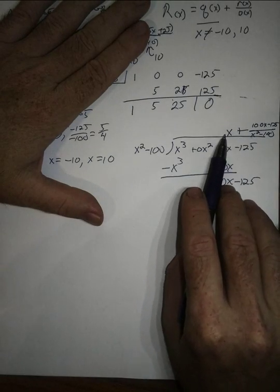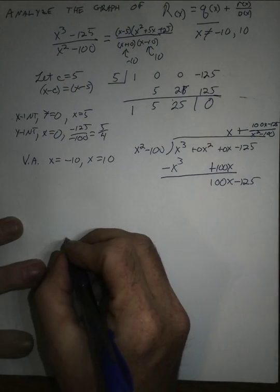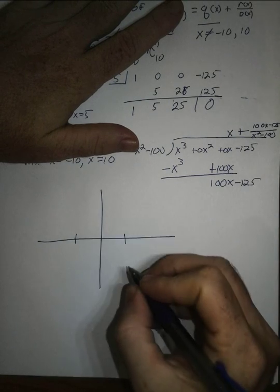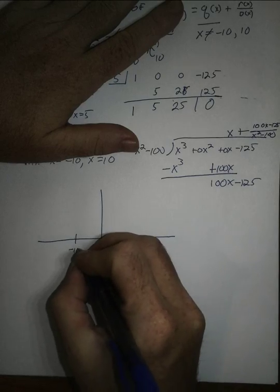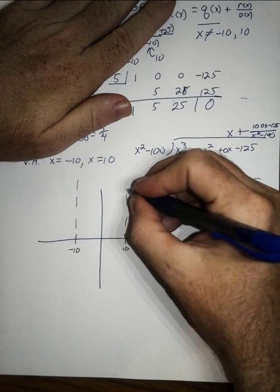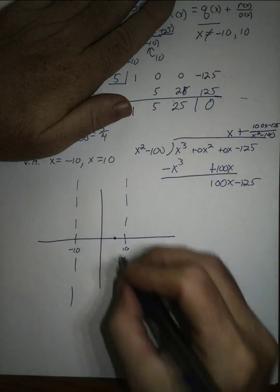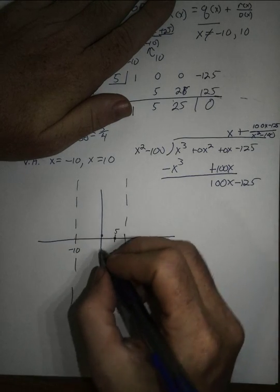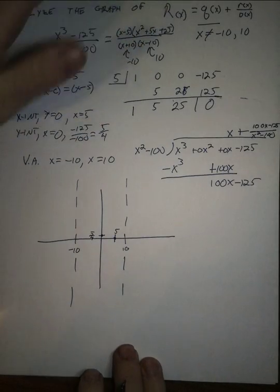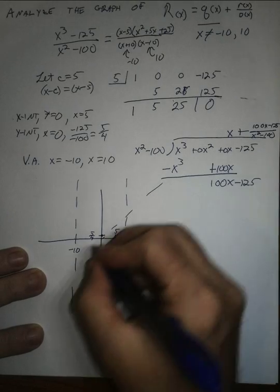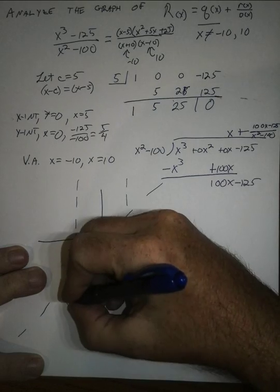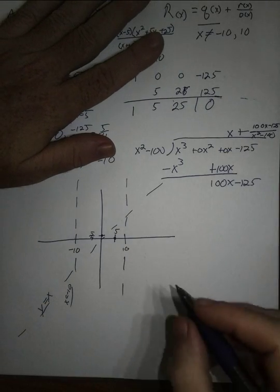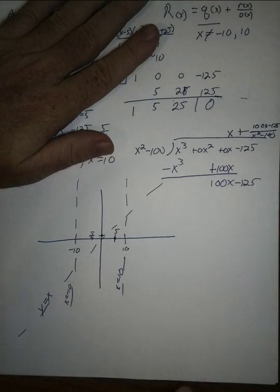The function looks like y = x for large x. Now I'll put the frame on my sketch: vertical asymptotes at x = −10 and x = 10, the intercept point (5, 0), the y-intercept (0, 5/4), and the slant asymptote line y = x going diagonally across the graph. Those are the vertical asymptotes.